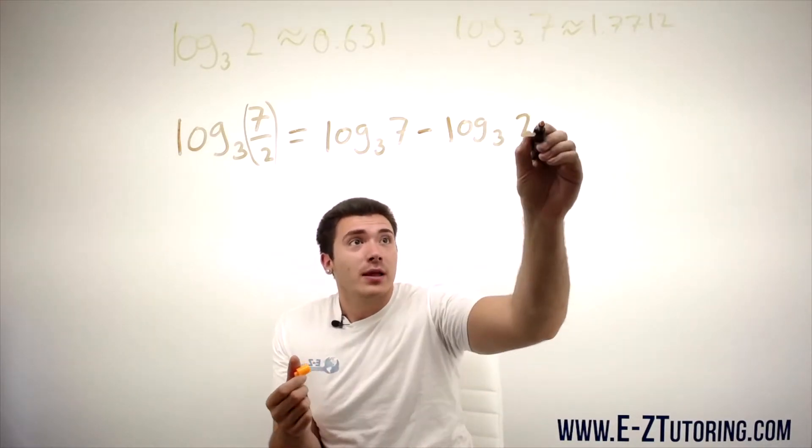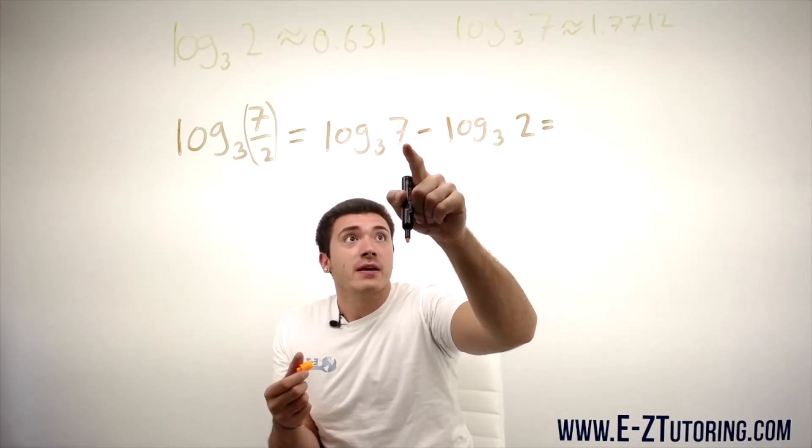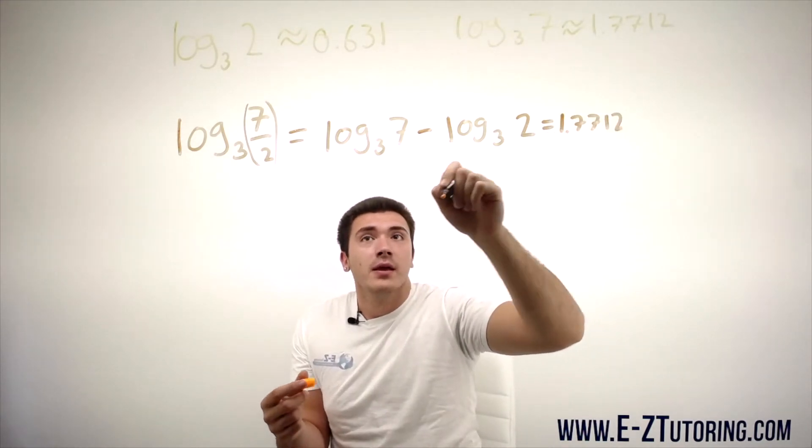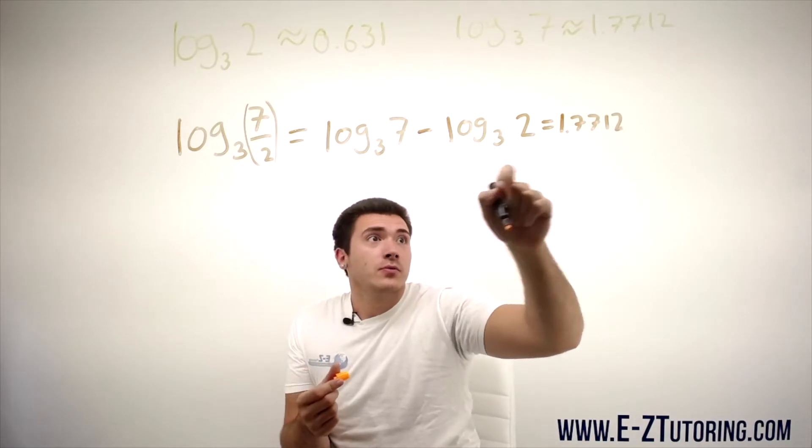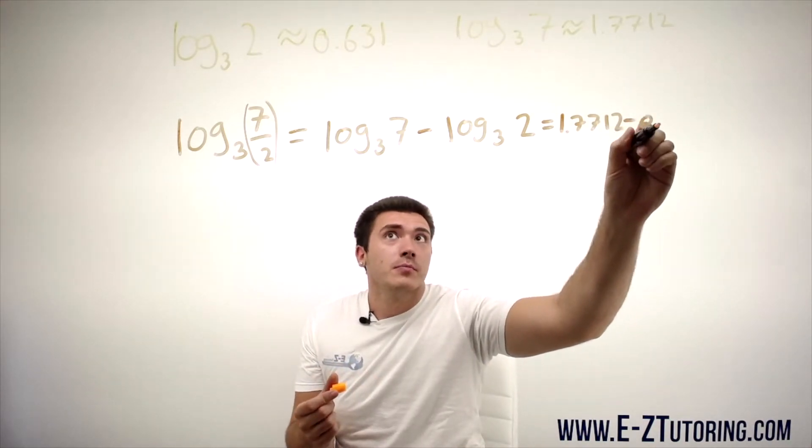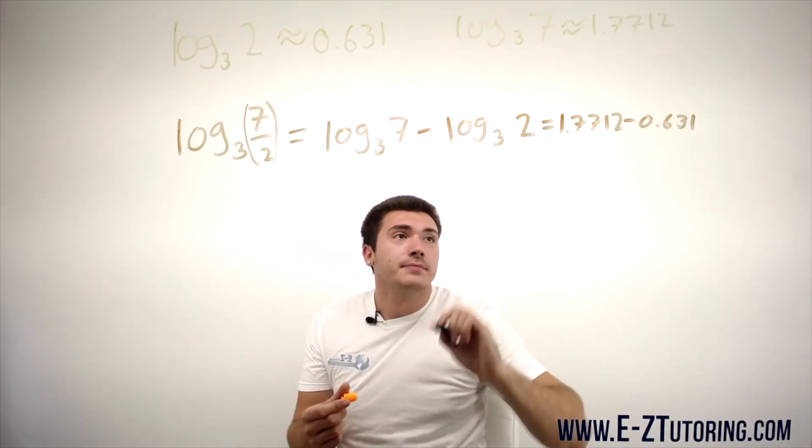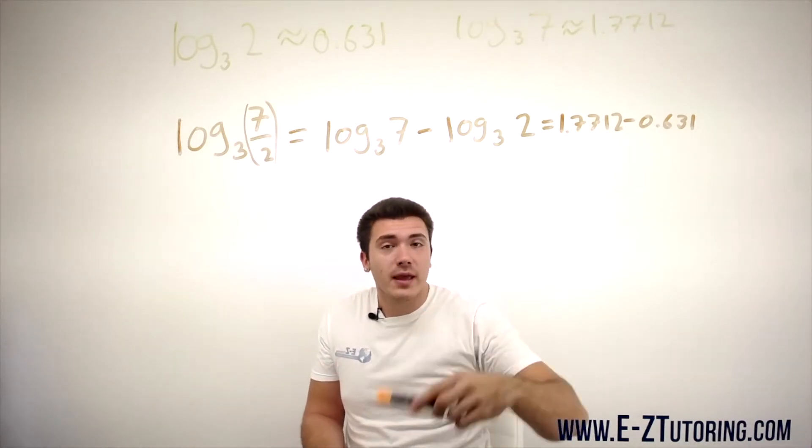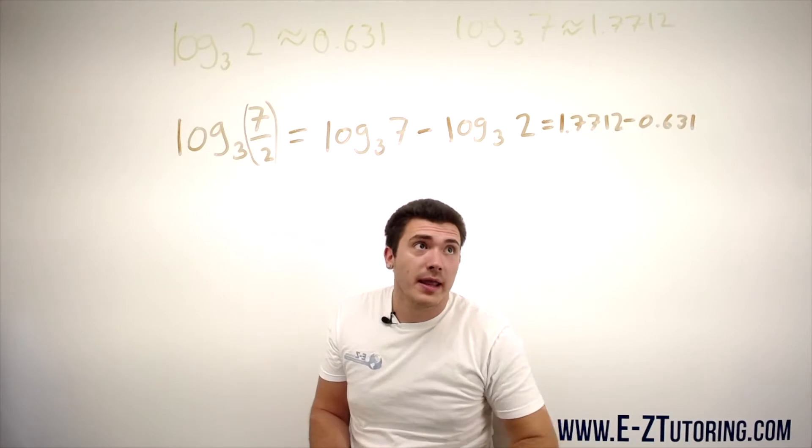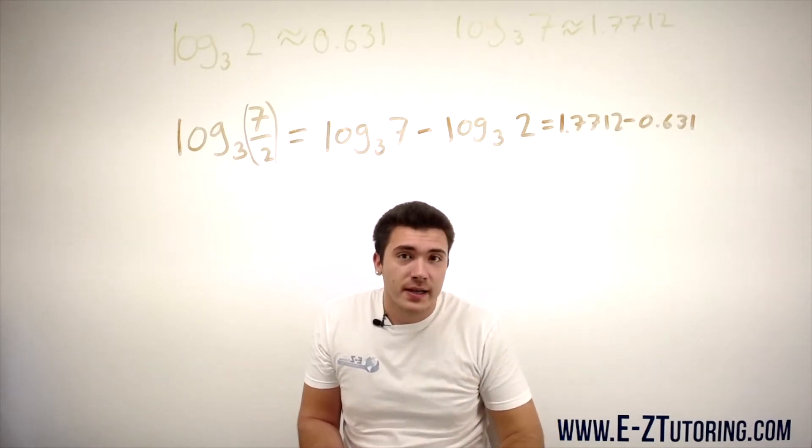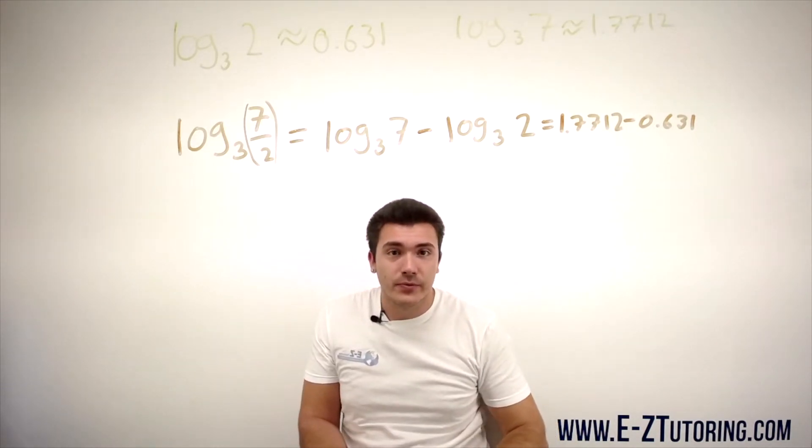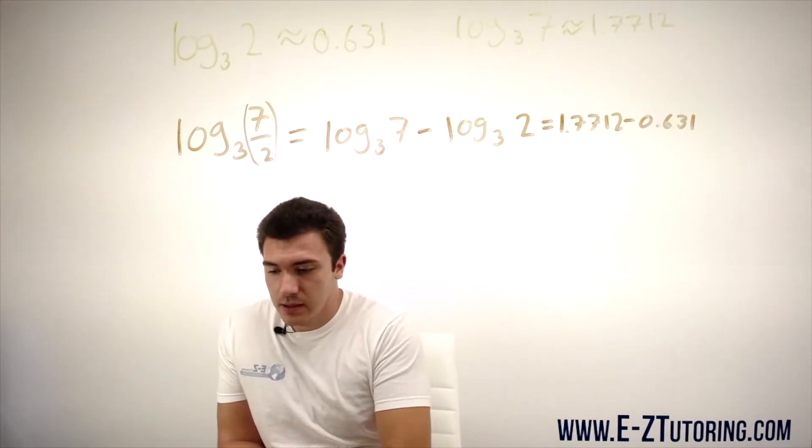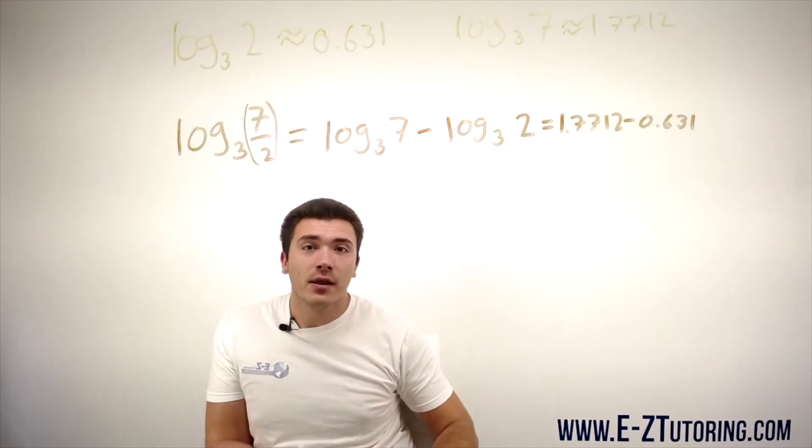So now we can replace log base 3 of 7 with 1.7712. We can replace log base 3 of 2 with 0.631. So now all you do is plug this into a calculator or you even do it by hand and you find out what this logarithm is equal to. So it's a very neat trick just by rewriting logarithms.